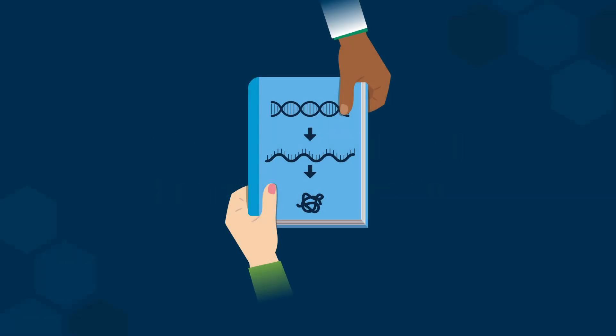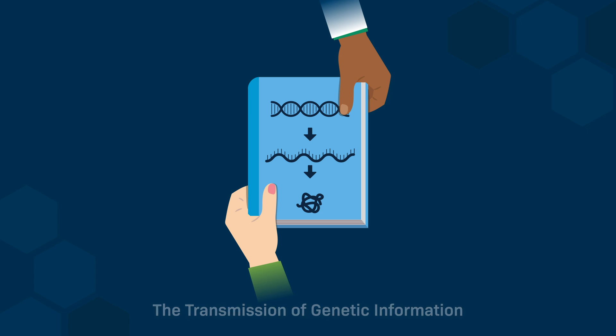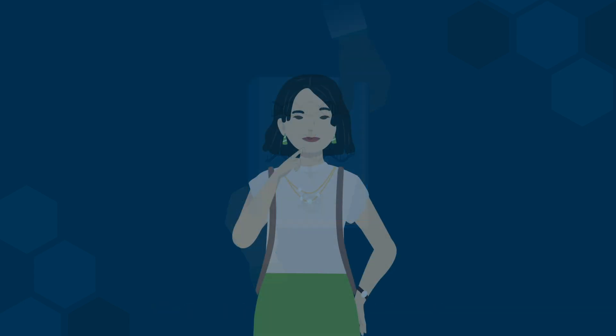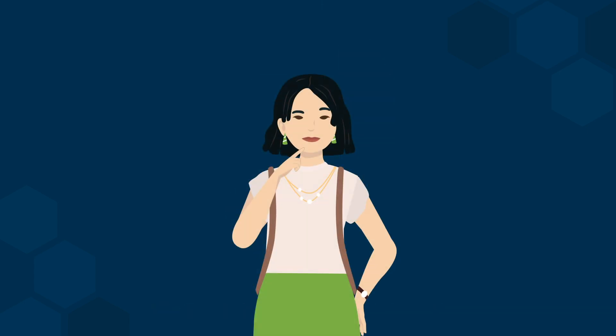In this video, we'll show how genetic information is transmitted across generations. The information needed for the survival and proliferation of all living organisms must be passed from one generation to the next.